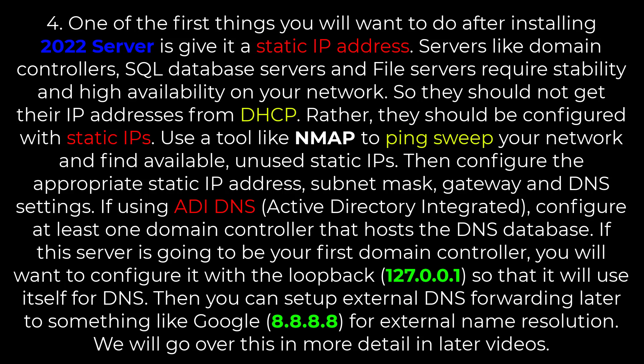Use a tool like nmap to ping sweep your network and find available, unused static IPs. Then configure the appropriate static IP address, subnet mask, gateway, and DNS settings. If using ADI DNS — active directory integrated — configure at least one domain controller that hosts the DNS database.